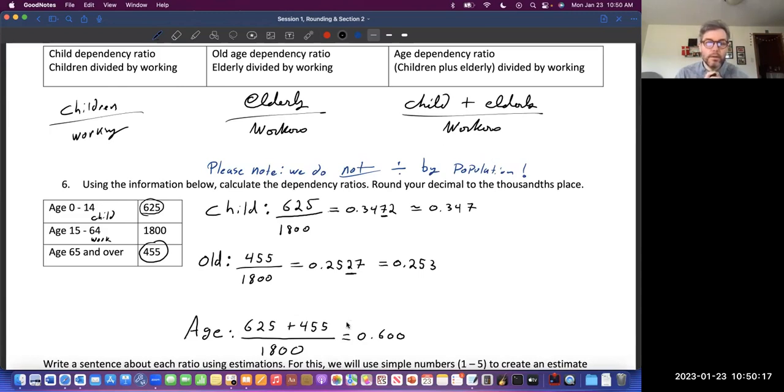Age dependency ratios, tricky, tricky, tricky. I mean, they're easy if you know what to do. There's just little steps. If you know what to do, it's not that bad. But it's all about knowing exactly what it's asking you to do. Are there any questions about these age dependency ratios?